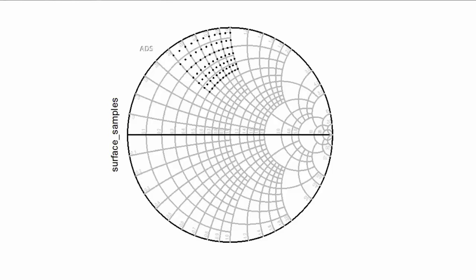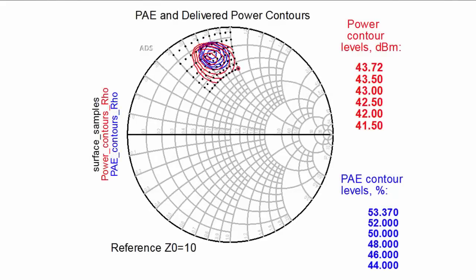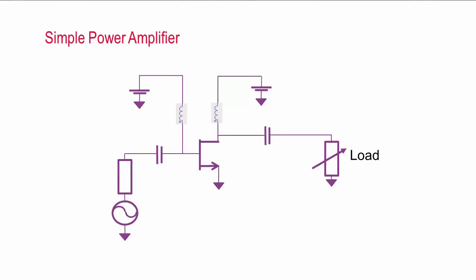In LoadPull, you sweep the load impedance presented to a device and measure key performance specifications. The resulting performance data, whether measured with test equipment or simulated using a nonlinear device model, is plotted on a Smith chart with contours of constant performance. From the LoadPull contours and data, you can see pretty clearly what impedance to present to your device and what performance you can expect. The power delivered to the load really depends on the load impedance. Let me briefly illustrate this.